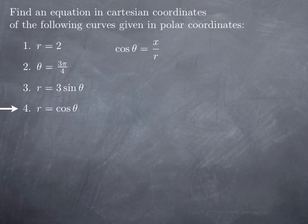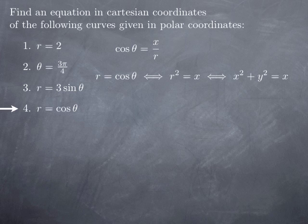Now what about the last curve, r=cosθ? We'll do something similar, which generalizes to curves of the kind r = a·cosθ. Since x=r·cosθ, we have cosθ=x/r (for r≠0). The pole (r=0) is part of the curve r=cosθ because cosine equals 0 when θ=π/2. Substituting gives r=x/r, so r²=x, meaning x²+y²=x.